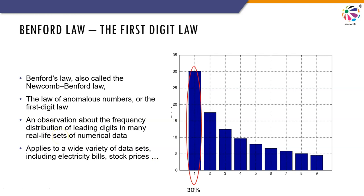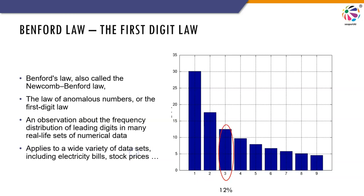As per Benford's Law, the first digit number 1 should occur in your dataset in about 30% of instances. 2 should appear 17%, 3 should appear 12%, 4 should appear about 10%, 8 should appear about 5%, and 9 should appear in about 4% — less than 5% basically. This is based on the study of leading digits in different datasets, and that's how these numbers have been arrived at.